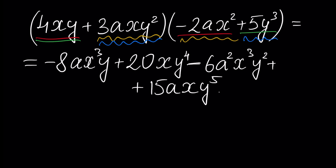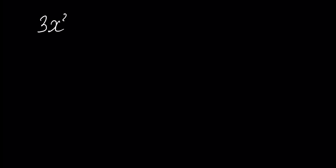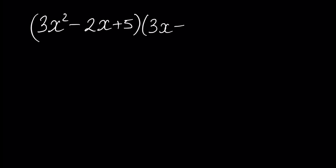And that's all — we performed our multiplication. For the last example, a more common case: assume we have 3x squared minus 2x plus 5, and this polynomial is multiplied by the second polynomial 3x plus 4.